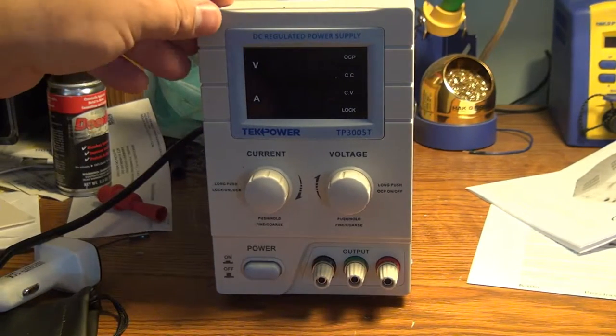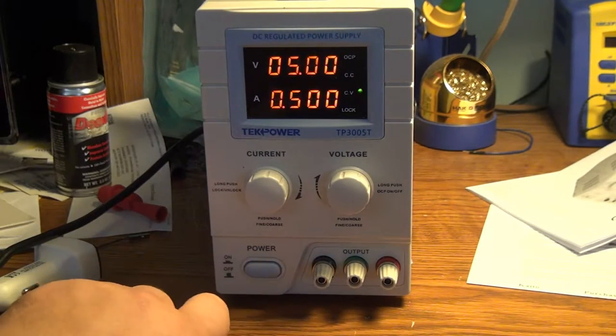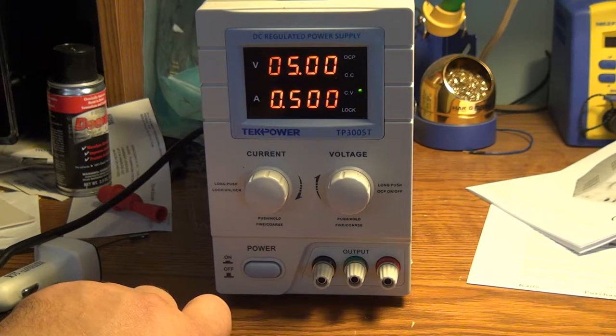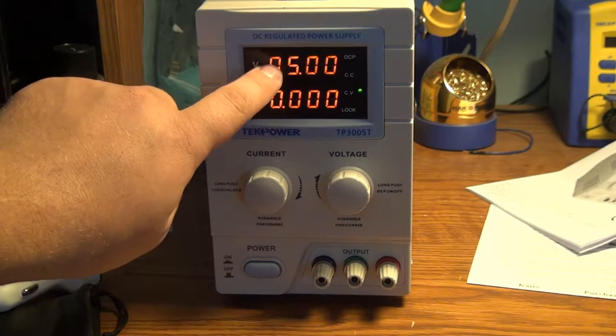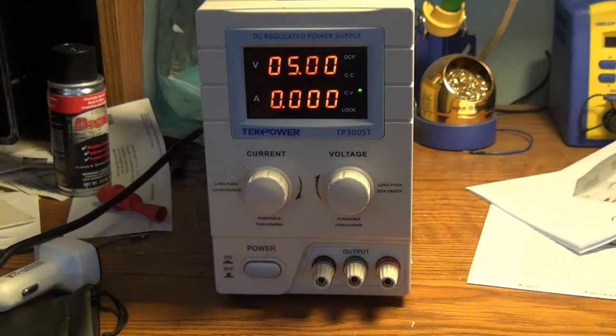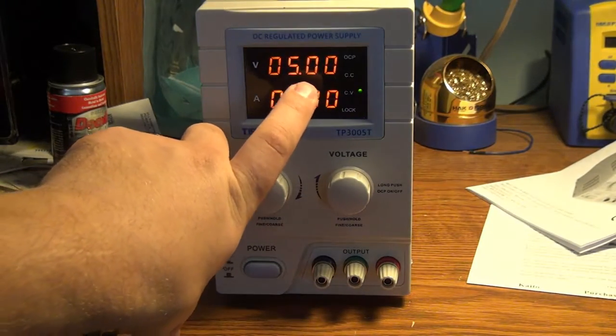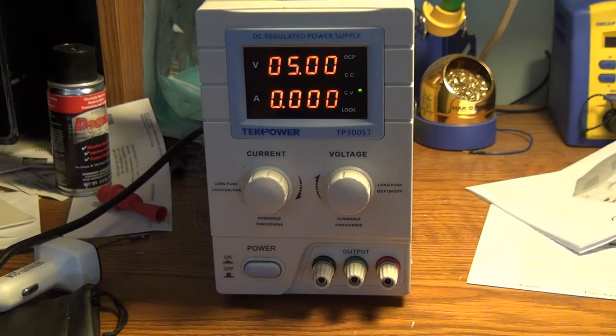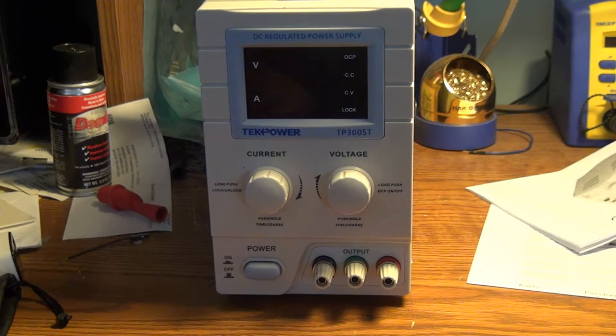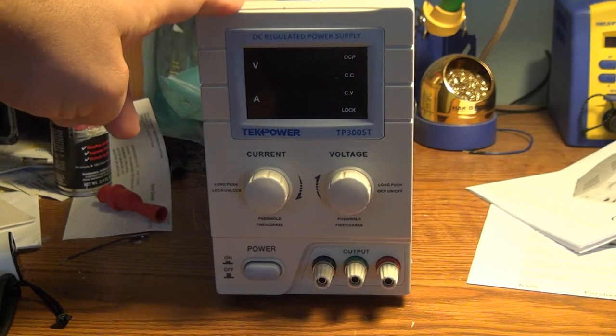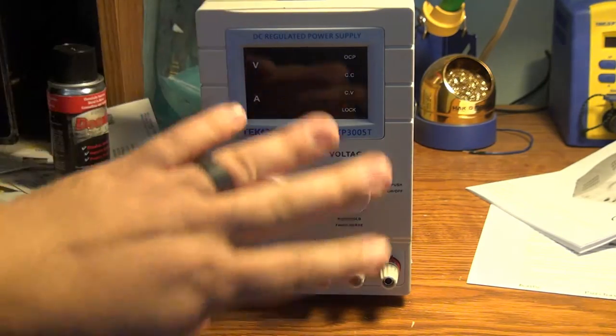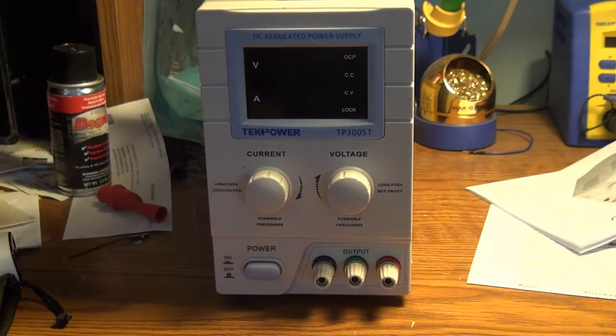There we go. And let's power her up. What I really like about the supply is it actually shows you what your presets are, particularly when you power it on. As you saw, it was five volts and half an amp. Now that we've got some of our pleasantries out of the way, let's just take a quick look around the supply.